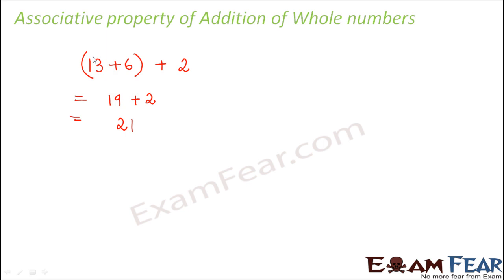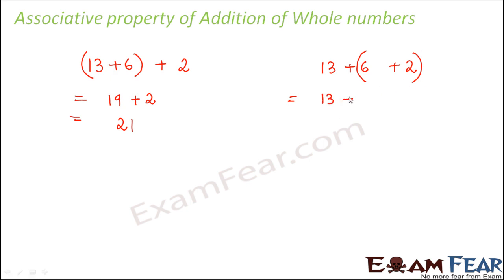Now what if I change the positions of these three digits? Earlier in commutative property we had two numbers and exchanged their positions, but now we have three numbers so there are different ways to change position. We basically do not change the position of the numbers - we just change the position of the bracket. Now we perform the operation inside the bracket first, so it becomes 13 plus 8, and the result is still 21.